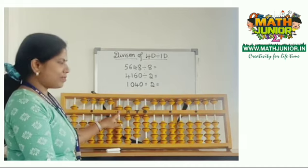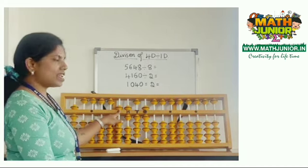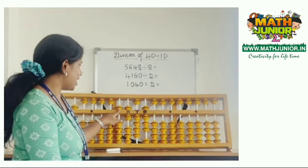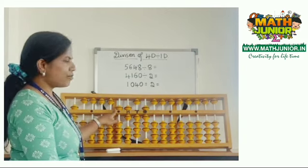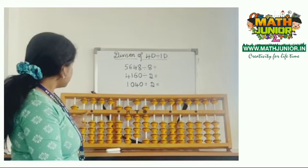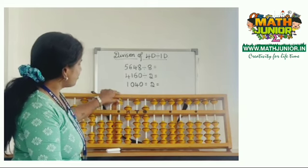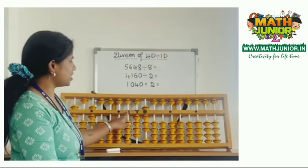Now compare the first number with 8. So 5 is less than 8. We cannot divide 5 by 8. Take one more number and make it 56. 8 times 7 is 56. Remove 56. Then I'm left with 04.